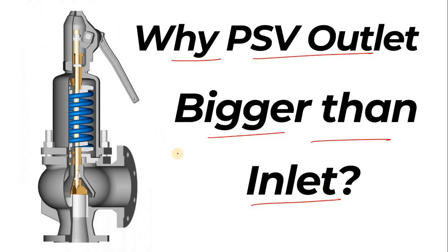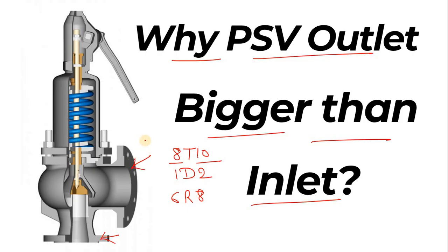The sizes are mentioned like '8 T 10' or '1 D 2' or '6 R 8'. The first number, for example 8, is the inlet size — the inlet flange size. The second number, for example 10, is the outlet size. And the letter in between, like 'P', defines the orifice size as per API.